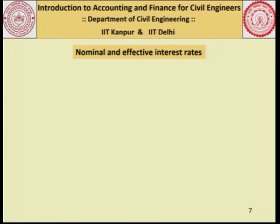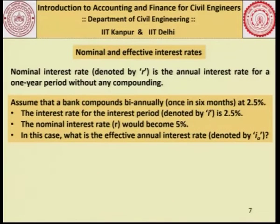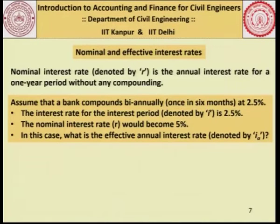Let us define the concept of nominal and effective interest rates. The nominal rate R is the annual interest rate for a one-year period without any compounding. Assume a bank compounds interest biannually at 2.5 percent — this means the interest rate for the interest period i is 2.5 percent, but the nominal rate is 5 percent because it is compounded twice a year. So it is 2.5 times 2, coming from the fact that it is being compounded biannually.